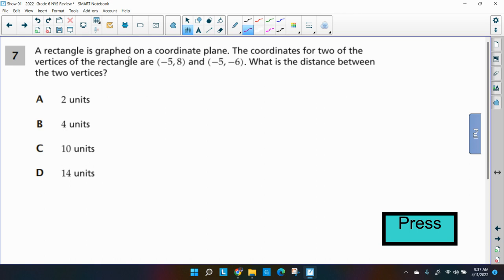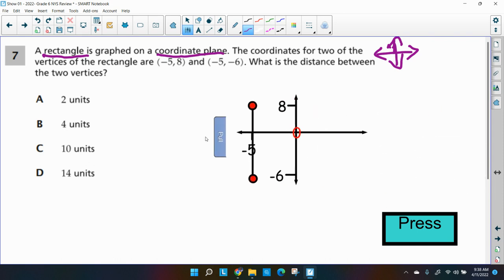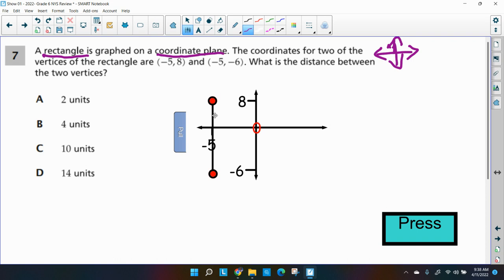All right, here's our next question. A rectangle is graphed on a coordinate plane. The coordinates for two of the vertices of the rectangle are negative 5, 8 and negative 5, negative 6. What is the distance between the two vertices? So we got another rectangle we're dealing with. And it's on a coordinate plane. If you remember the coordinate plane or the Cartesian plane, it looks like this. You have an x and y axis. So what I'm going to do is I'm going to do a better drawing than that. So I'm going to pull this out and take a look at those two points.